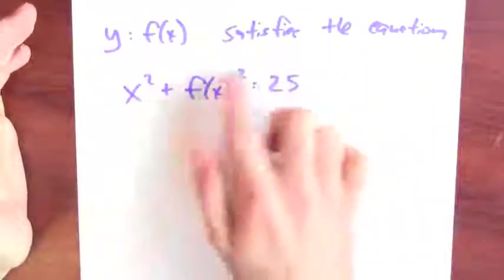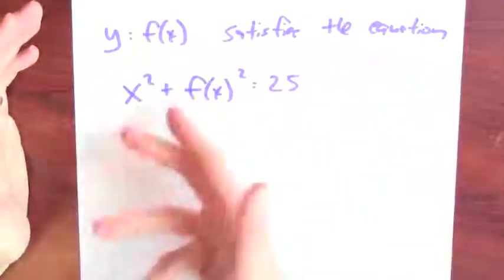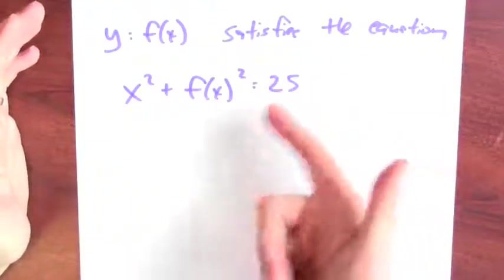So let's say there is a function, y equals f of x, that satisfies the original equation. Well then I can write that down. y equals f of x satisfies the equation just means that x squared plus f of x squared equals 25.